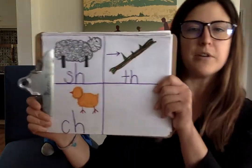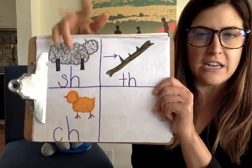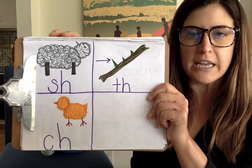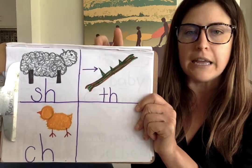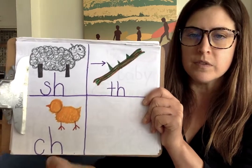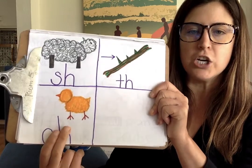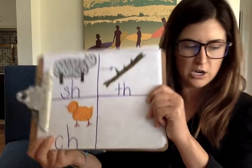To play this game we need to remember our digraphs. S and H squish together say sh like sheep. T and H squish together say th like thorn. C and H squish together say ch like chick. So we're going to play the hokey pokey and I'll be telling you some things to put in that start with those sounds. Let me write the first one and then when we get to that part I'll ask you to read it, and I'm gonna underline the digraph to make it a little bit easier.